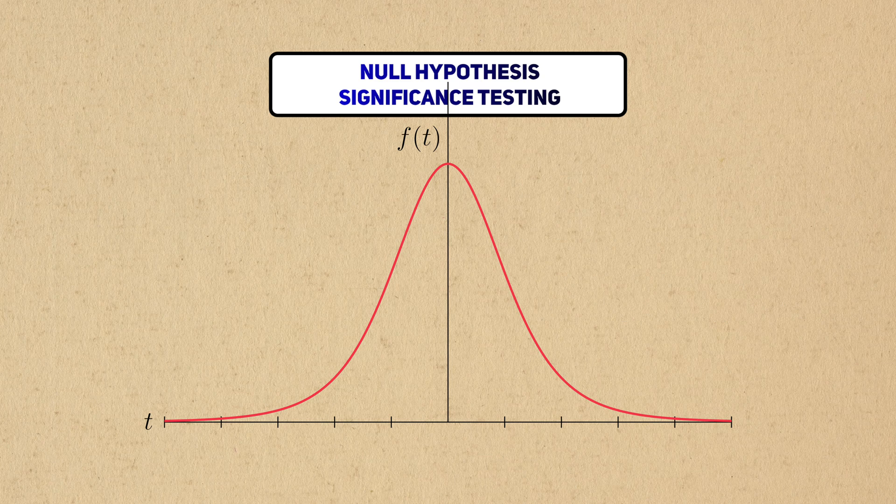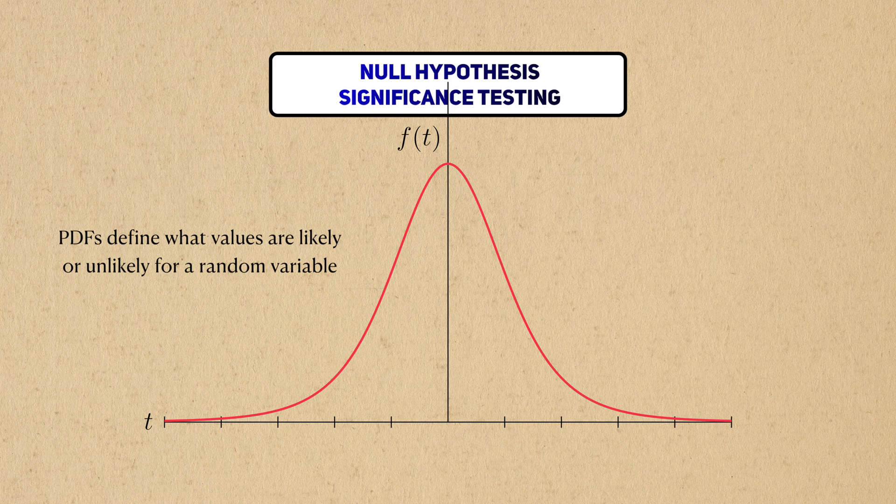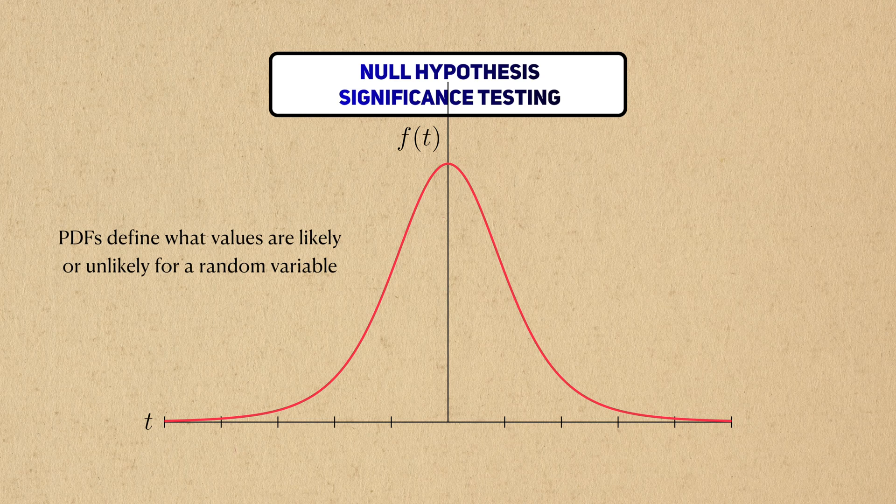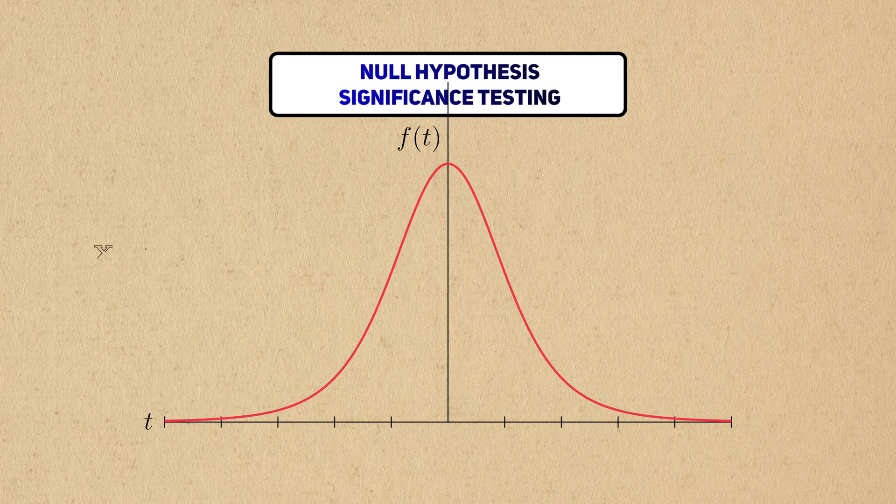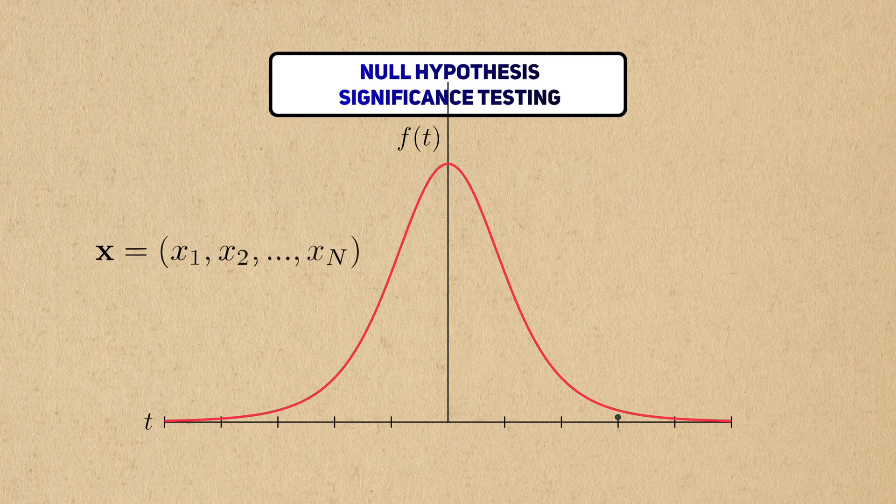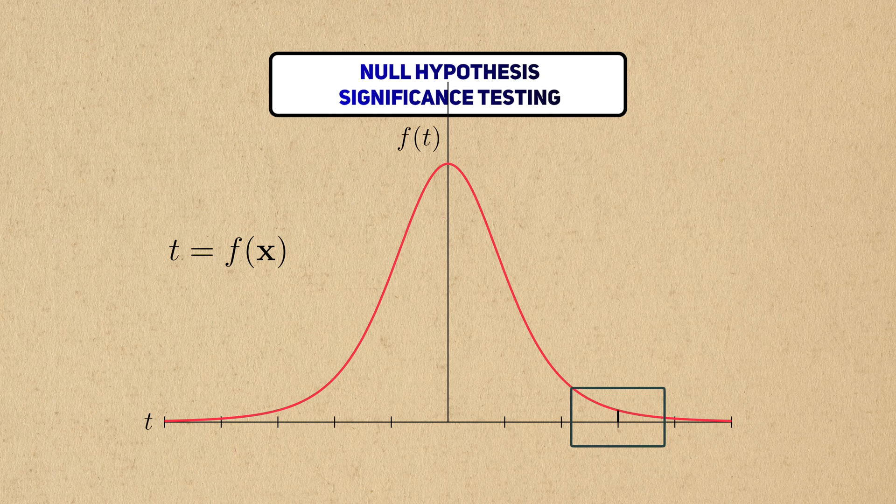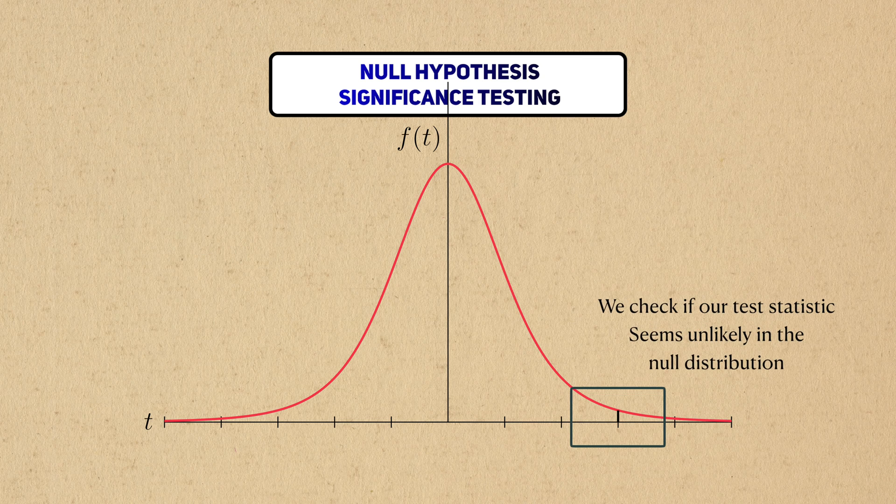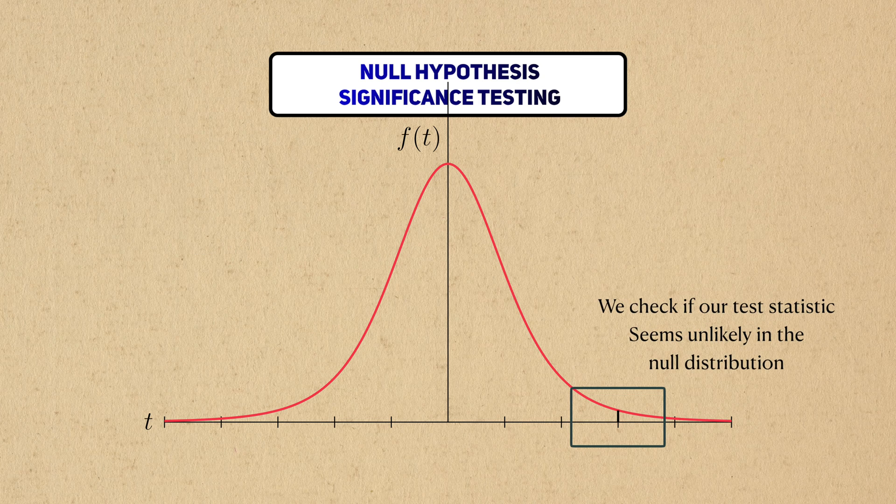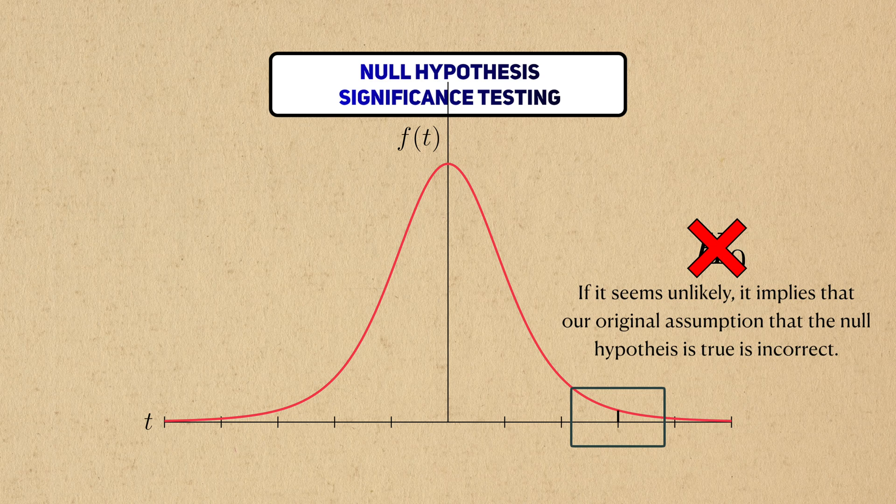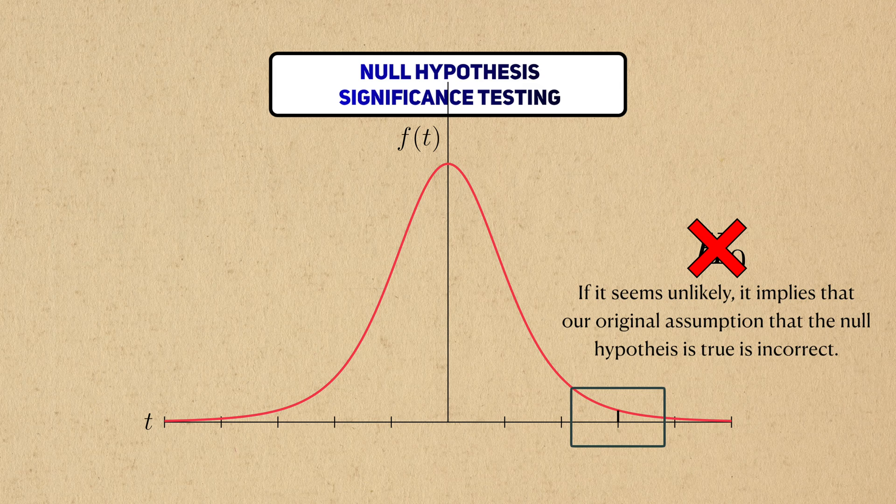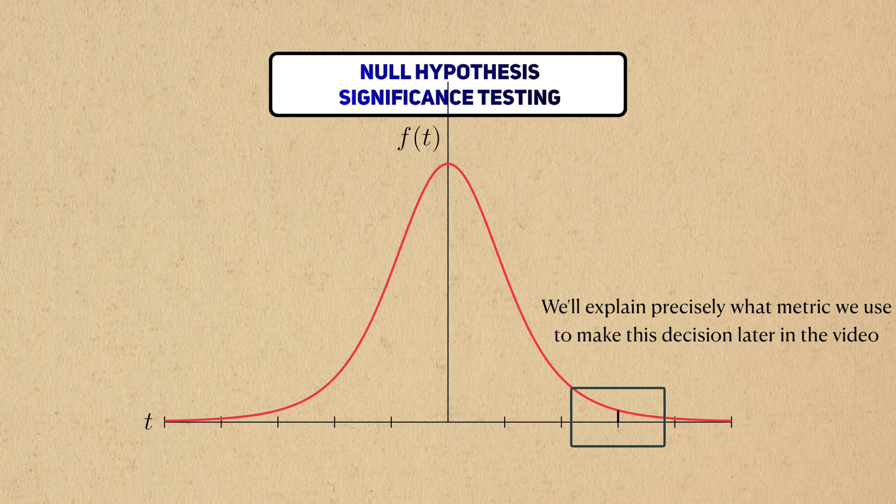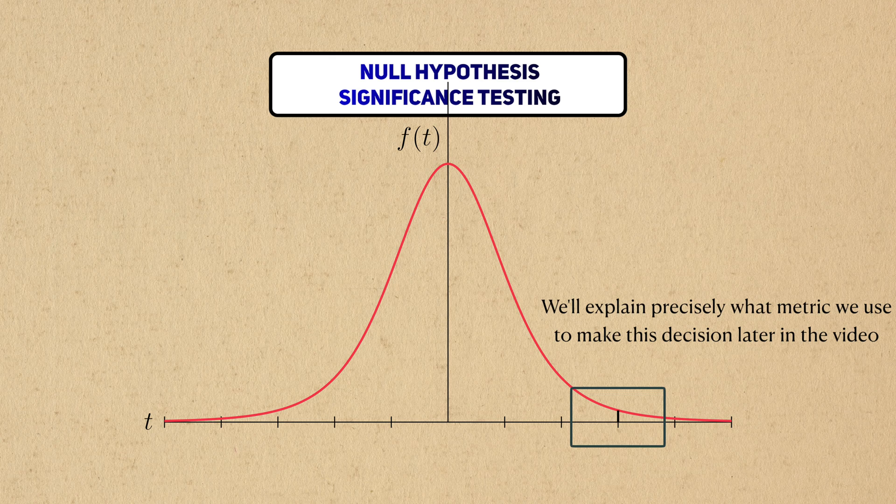And here's the key idea. Remember that a probability density function tells us what values are likely and unlikely for a given random variable. After we calculate our statistic, we'll see where it falls within this null distribution. If our test statistic looks unlikely in the null distribution, it implies that our original assumption that the null hypothesis was true is questionable and that we should reject it. And we'll see exactly how we judge a test statistic to be likely or unlikely later in the video.